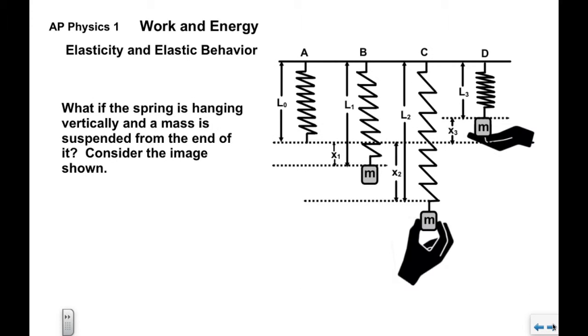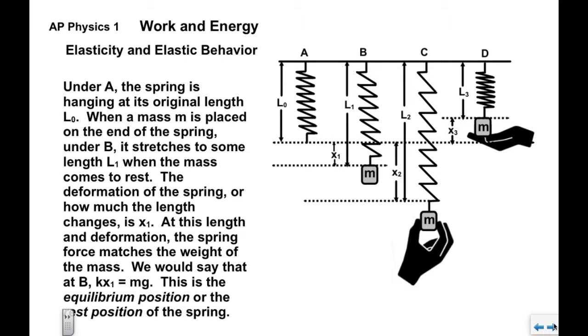Now we'll look at a slightly different situation. What if the spring were to be hanging vertically and then we put a mass on it? We have an image here with several different situations shown. When we look at point A or situation A, the spring doesn't have any spring force on it, so it just kind of hangs there at its original length, L sub zero.